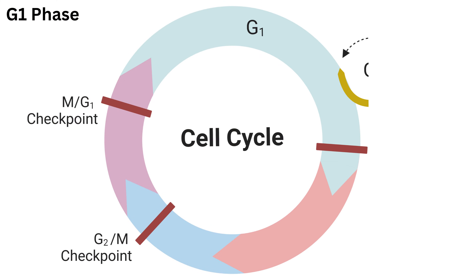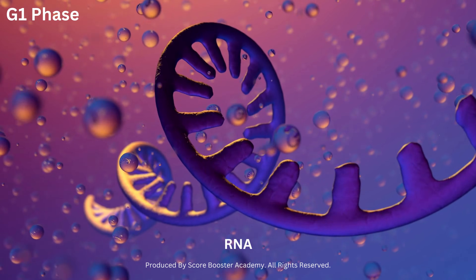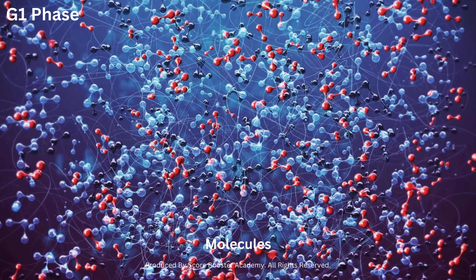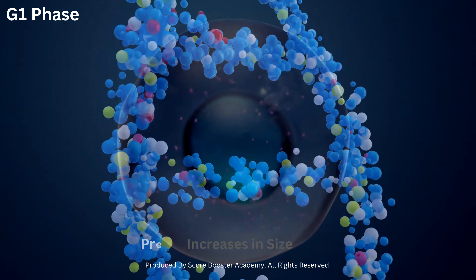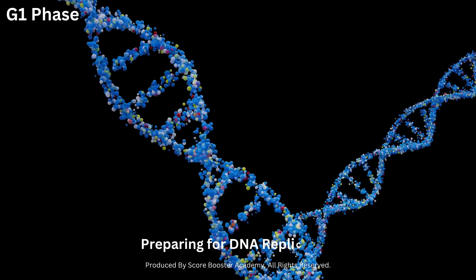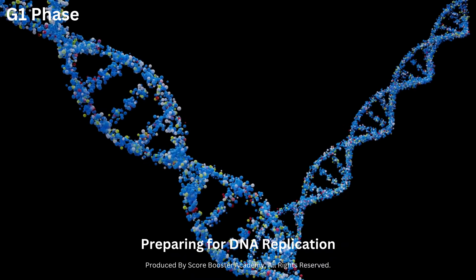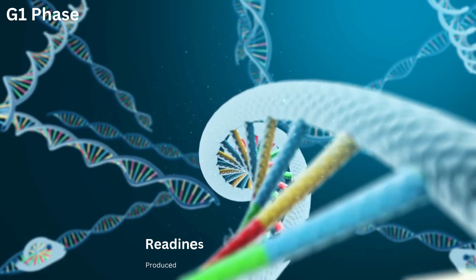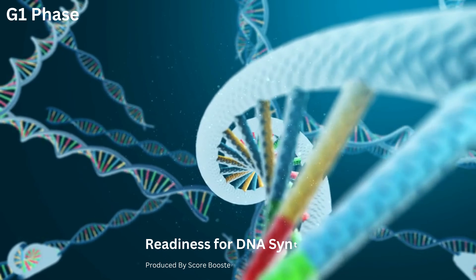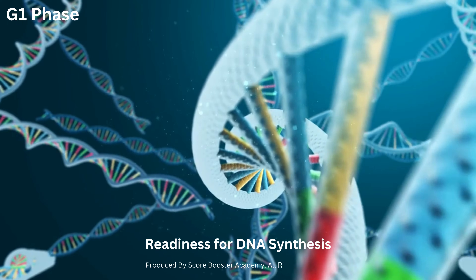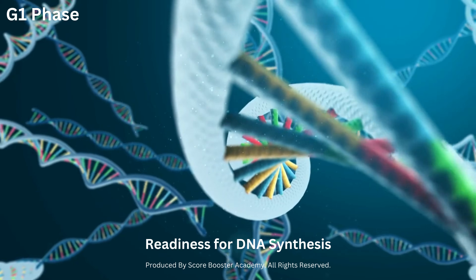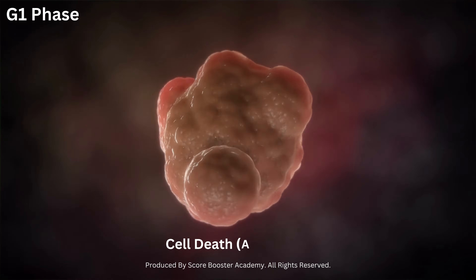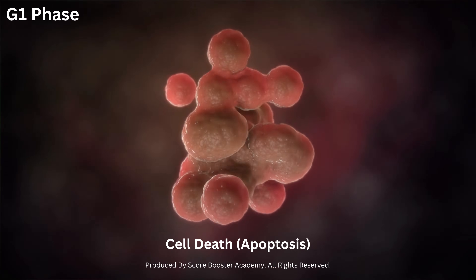During the G1 phase, the cell synthesizes various proteins, RNA, and other molecules required for cellular activities. It also increases in size and prepares for DNA replication. Multiple checkpoints monitor the G1 phase, allowing the cell to assess its readiness for DNA synthesis. If any abnormalities are detected, the cell may enter a state of arrest or undergo programmed cell death — apoptosis — to maintain genomic stability.